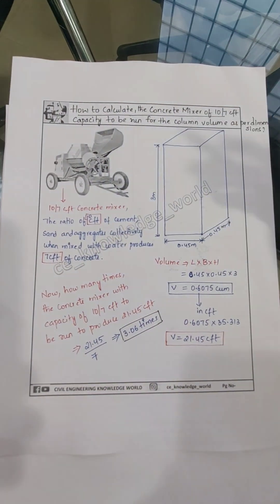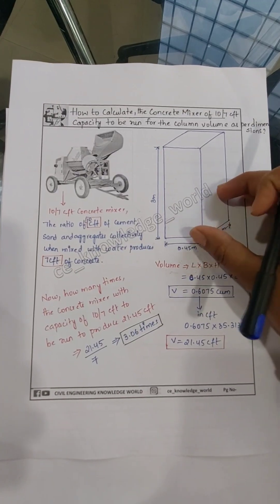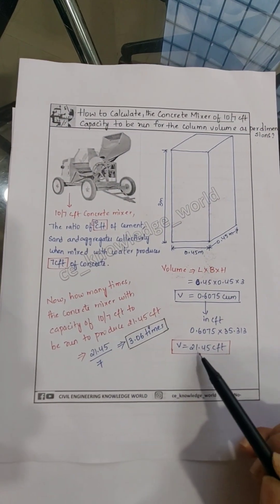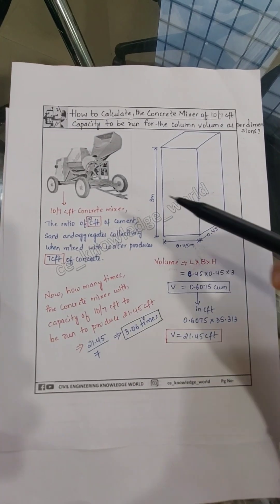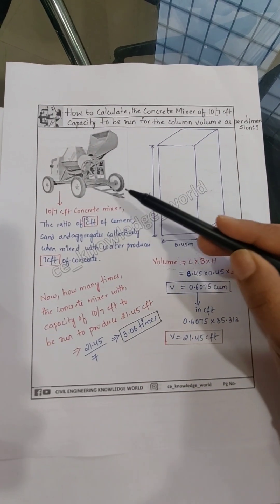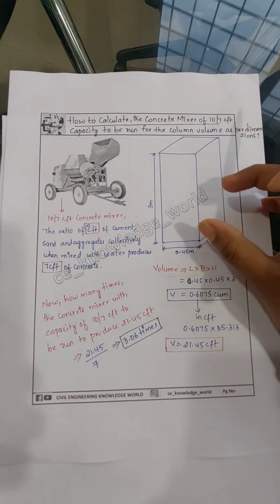So we divide 21.45 cft by 7 cft, which gives us 3.06 times. This means we have to run the machine for 3.06 times to finish this concrete work.